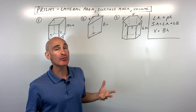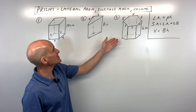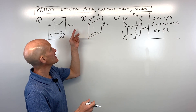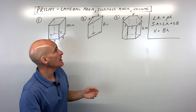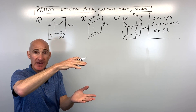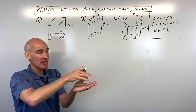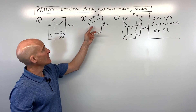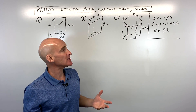What exactly is a prism? When you look at these three diagrams, you can see a prism is a polyhedron, which means all the faces or sides are made up of polygons. You have two polygons referred to as the bases — they're parallel and congruent, meaning they're the same size and shape, separated by the height. Here we've got two triangles, here we have two hexagons.